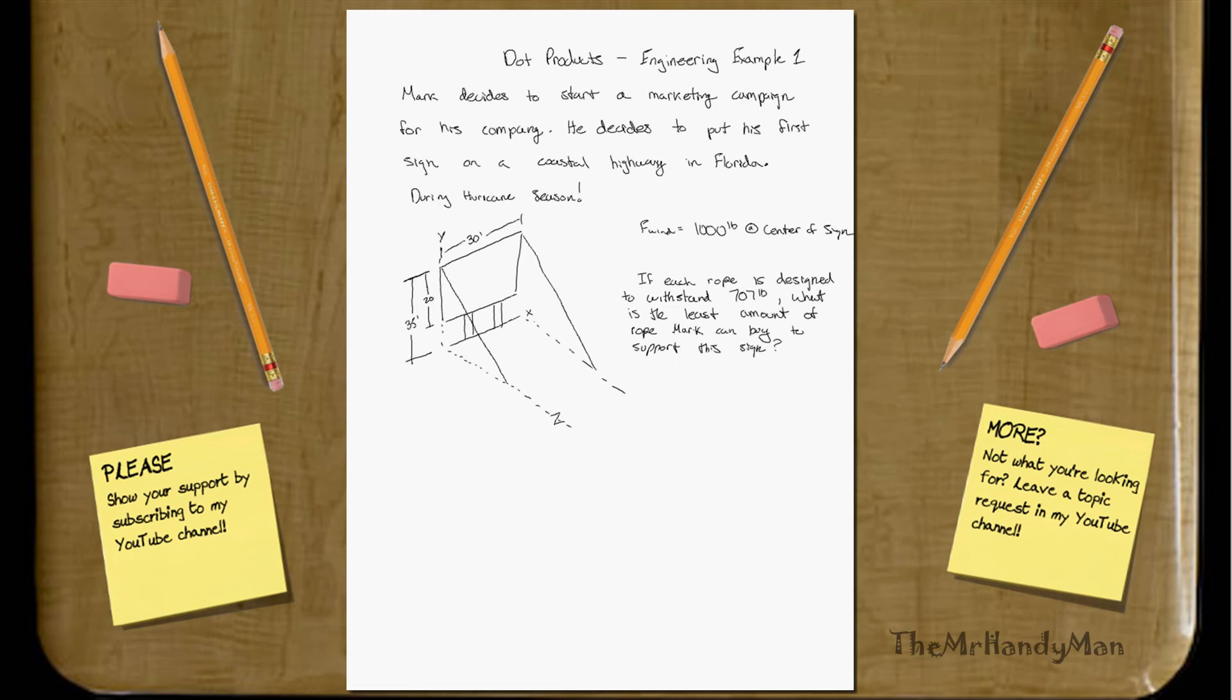Hi there, this is the first dot product engineering example. And basically, we'll just start off with Mark's little sign that he put in Florida. So, here's the problem.